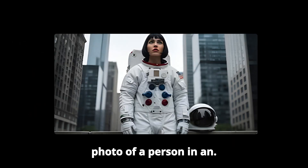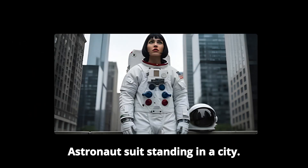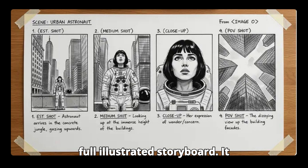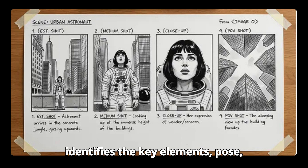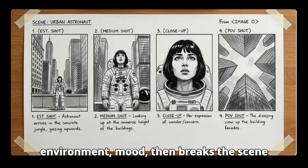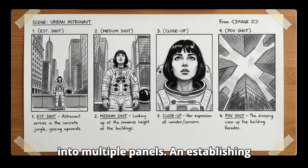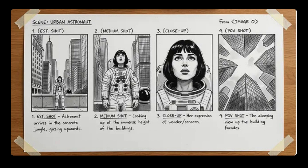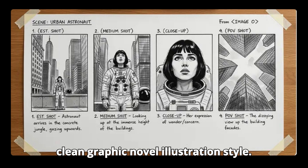Starting with a single photo of a person in an astronaut suit standing in a city, Nano Banana Pro can generate a full illustrated storyboard. It identifies the key elements — pose, environment, mood — then breaks the scene into multiple panels: an establishing shot, a medium shot, a close-up, and a POV shot. Each panel is redrawn in a clean graphic novel illustration style.